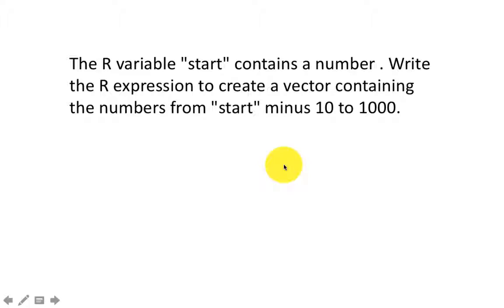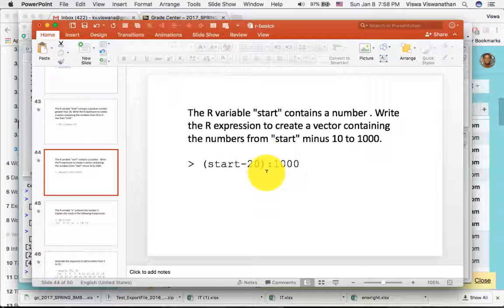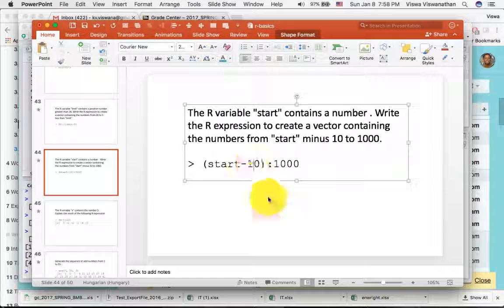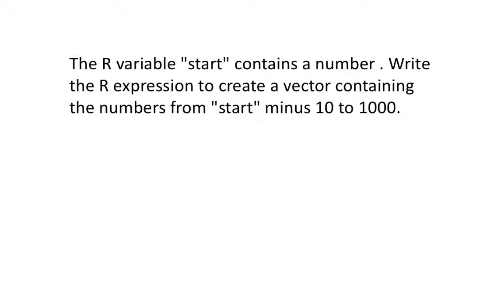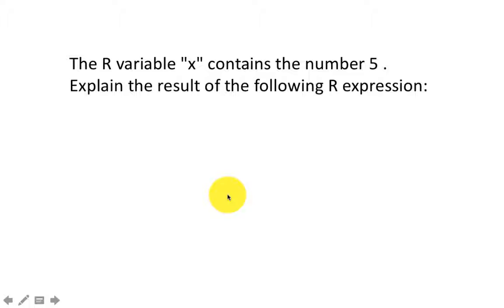This is similar. The R variable start contains a number. Write the R expression to create a vector containing the numbers from start-10 to 1000. By now, based on the previous example, clearly you know that you have to put start-10 in parentheses because of operator precedence.